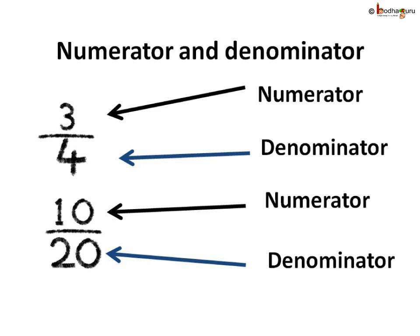So, we call the top number the numerator; it gives the number of parts you have. We call the bottom number the denominator; it is the total number of parts the whole or collection is divided into. So remember, a fraction is represented as numerator by denominator.